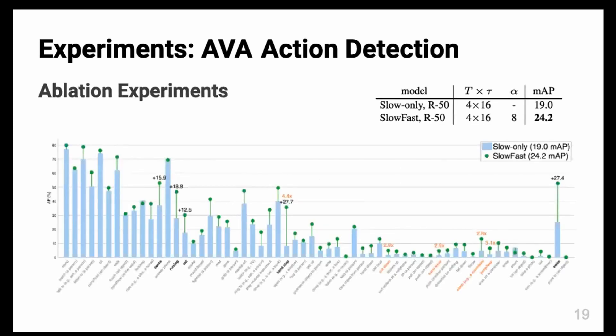This is also the result of ablation studies. They also showed with the green points how much of the performance can be increased when they use both of the slow pathway and fast pathway. You can see the performance increase with the mAP values on the right upper side.